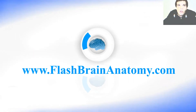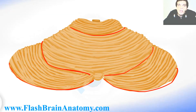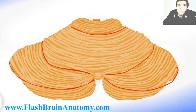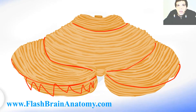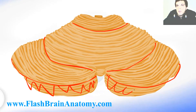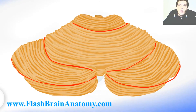Then we have the horizontal fissure — if you remember, I drew that in the last video from the frontal side. Below that there is the inferior semilunar lobe. So this lobe over here is the inferior semilunar lobe.